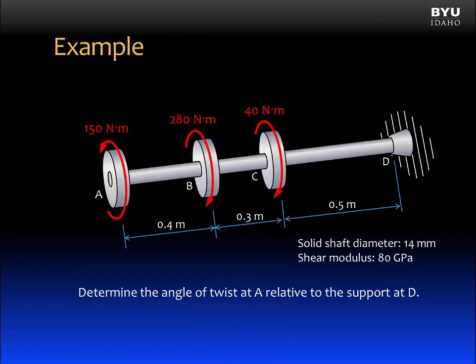Let's look at an example. This problem reads, Determine the angle of twist at A relative to the support at D. Here is the structure. There is a shaft that runs from A to D. At three points along the shaft, there is an external torque applied. At A, it is 150 newton meters. B and C are 280 newton meters and 40 newton meters, respectively, and in opposite directions to the torque at A. Lengths between the applied torques are given. At D, the structure is fixed.